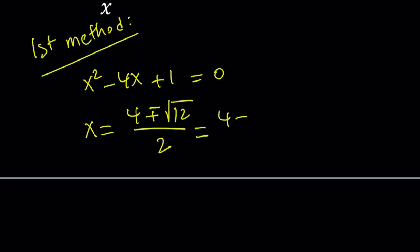Square root of 12 can be written as 2 times the square root of 3. And if you divide everything by 2, you get 2 plus minus square root of 3. So this is a quadratic equation, and there are two roots. 2 plus root 3 and 2 minus root 3. Those are the possible x values.